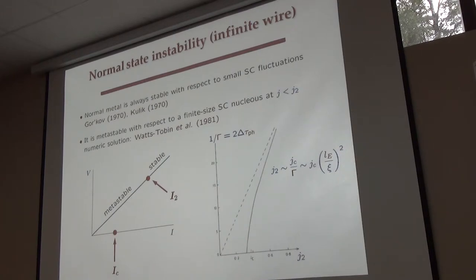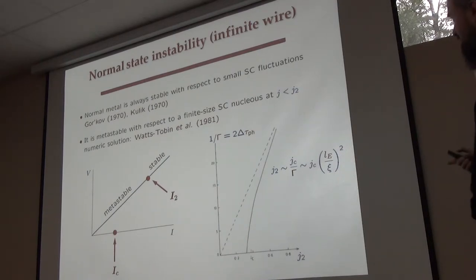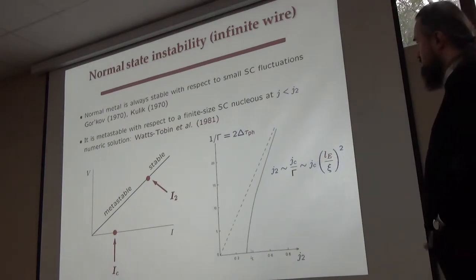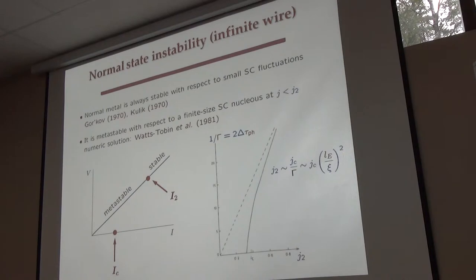Above I2, the normal state is absolutely stable with respect to any formation of superconductivity. Below I2, it is metastable — meaning it's possible to make a finite-size nucleus of a superconducting state somewhere in the wire, and then it will finally expand to the whole wire. The normal state is over-cooled, so this is a first-order phase transition.